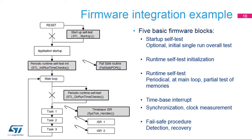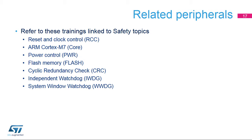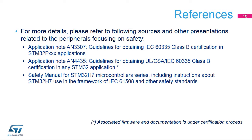Optionally, a one-time initial startup overall self-test can be additionally implemented at power-on or after application reset. Whenever a malfunction or discrepancy is found during these tests, the fail-safe routine is called; it should put the application into safe state and determine the next recovery possibilities. Safety is spread over the full STM32H7 product range. For more details, please refer to the dedicated documentation and contact your local ST representatives for the availability, status, and possible delivery of the firmware and associated documentation.